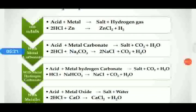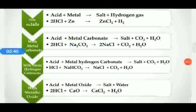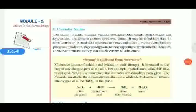Acid reacting with metal carbonate produces salt, carbon dioxide, and water. For example: 2HCl + Na₂CO₃ gives NaCl + CO₂ + H₂O. When acid reacts with metal hydrogen carbonate it also produces salt, carbon dioxide, and water. When acid reacts with metallic oxide, acid plus metal oxide gives salt plus water. Acid also reacts with base to produce salt and water, which we will discuss later.